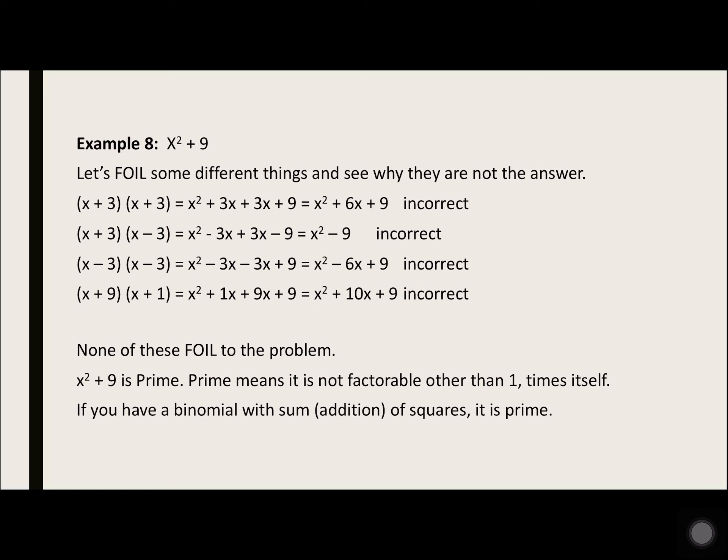What about x plus 1 times x plus 9? x squared plus 1x plus 9x plus 9 gives x squared plus 10x plus 9 — not correct. You can see that none of those FOIL out to x squared plus 9. x squared plus 9 is prime. Prime means it's not factorable other than 1 times itself. If you have a binomial with sum of squares — sum of squares means addition — it is prime. If you have squares with a plus in your binomial, it is prime.